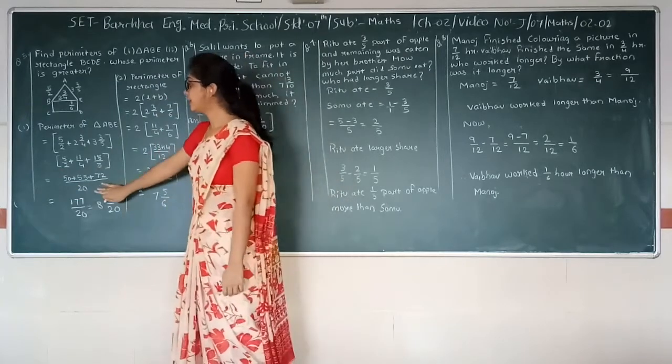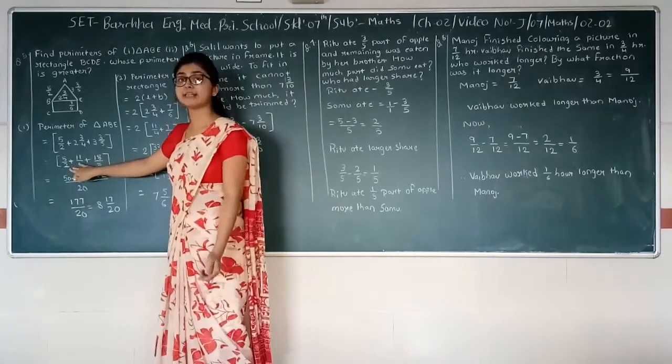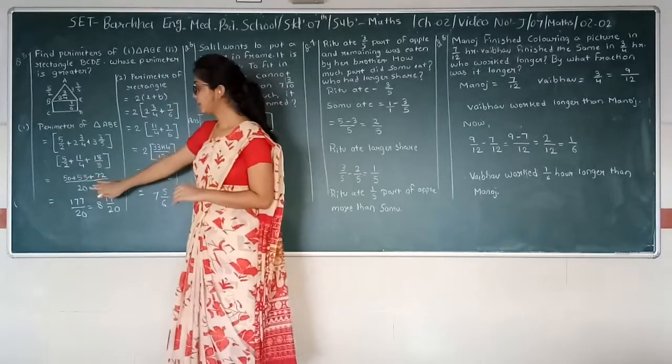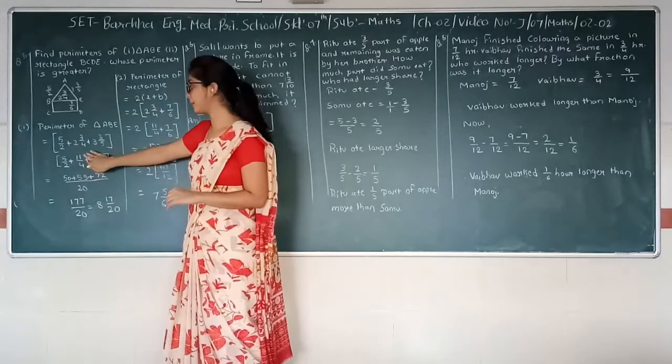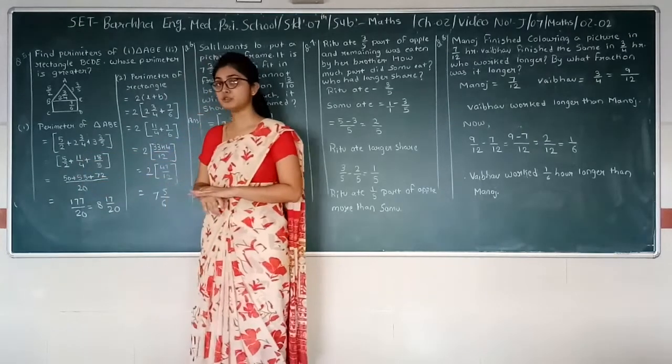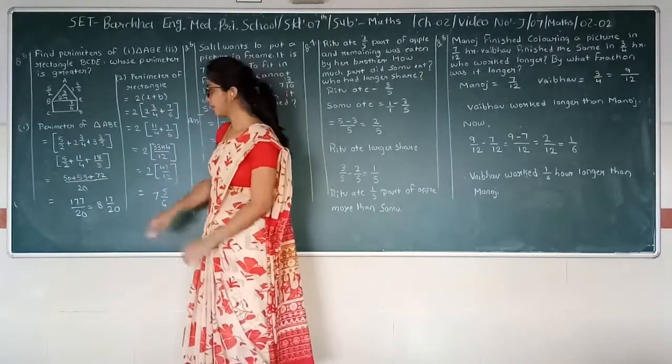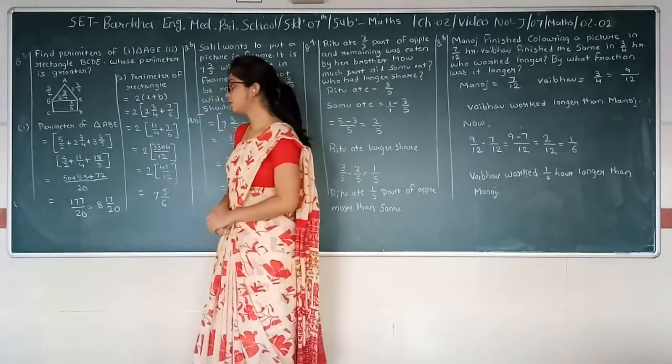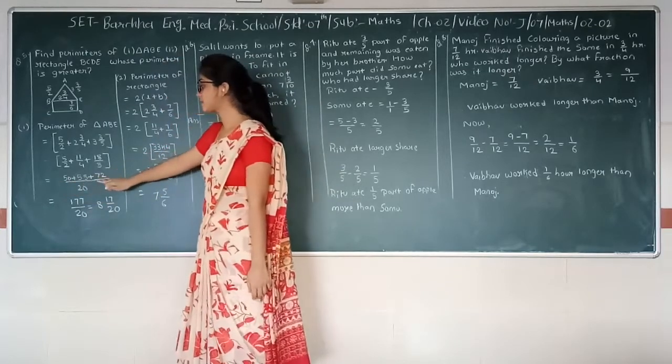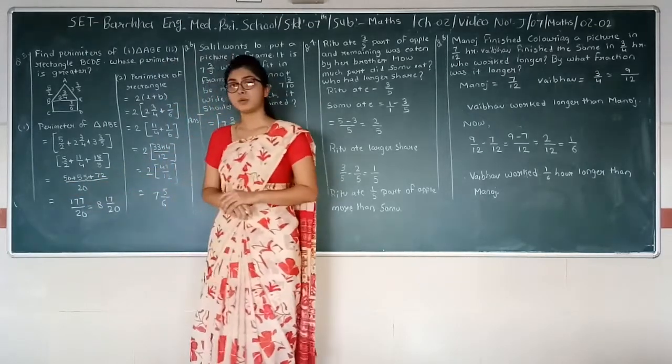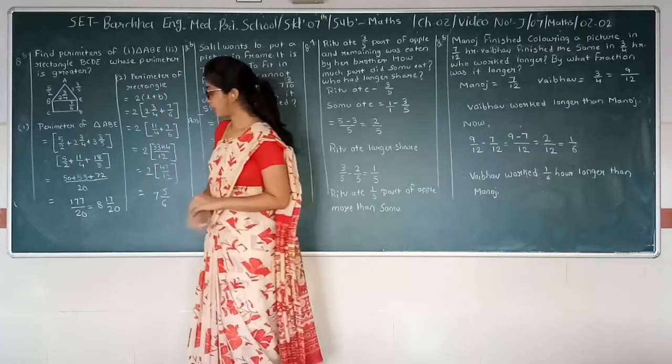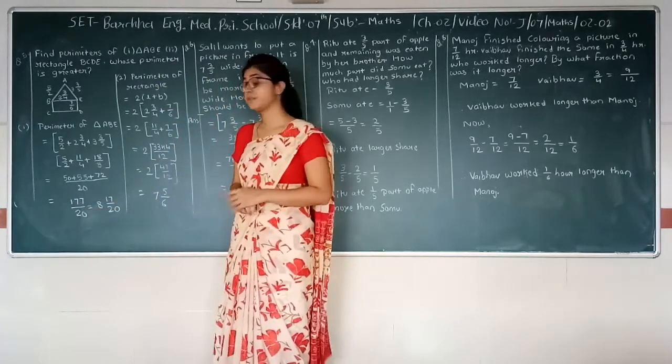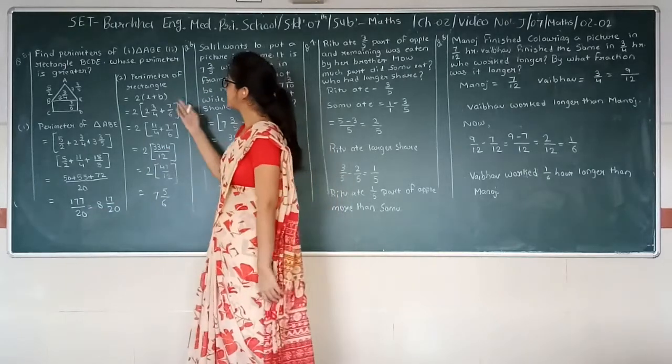And LCM of 2, 4 and 5 is 20. So if we divide 20 by 2 and then multiply it with 5, we will get answer 50. Next one, 20 divided by 4 multiplied by 11 is equal to 55. Next one, 20 divided by 5 multiplied by 18 is equal to 72. Now if we add all these terms we will get answer 177 upon 20. As it is improper we have to convert it into mixed.